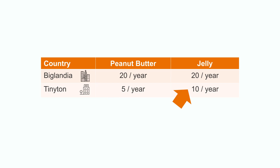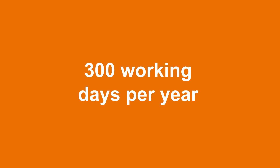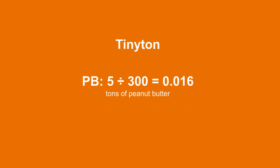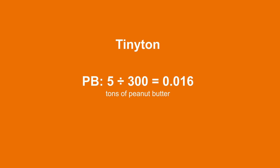So they aren't as good at making peanut butter as they are making jelly. To keep it simple, let's assume that there are 300 working days in the year. That means each day, Biglandia can choose to either make 0.067 tons of peanut butter or jelly respectively. Tinyton can choose to make either 0.016 tons of peanut butter or 0.033 tons of jelly per day.